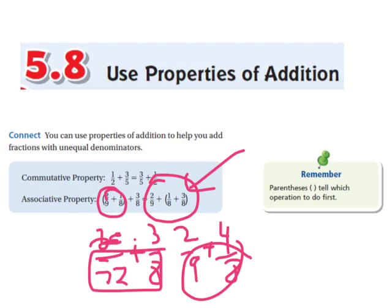Because I recognize that these two terms have the same denominator, and I use the associative property to add those first. So associative property basically is add the easiest stuff first. Commutative property says you can flip them around, if that's easier for you.